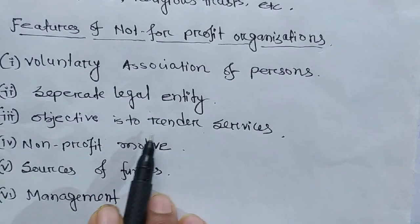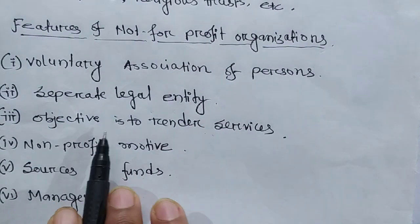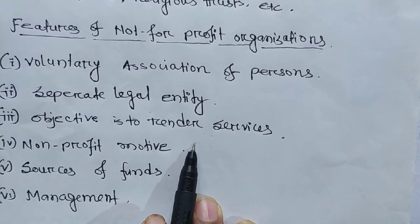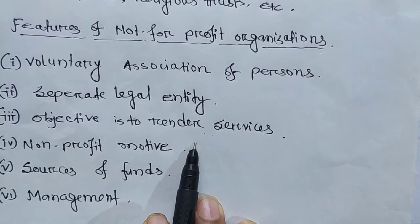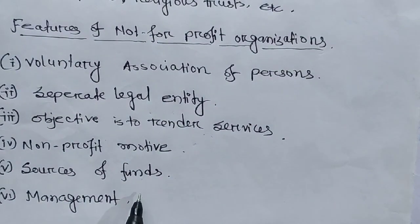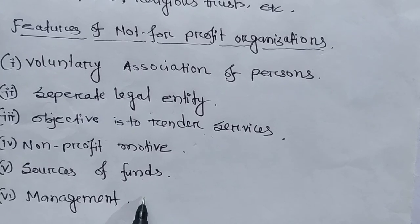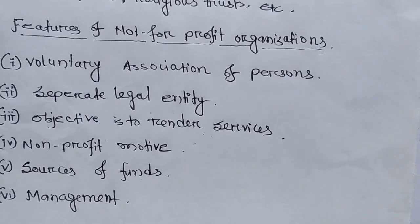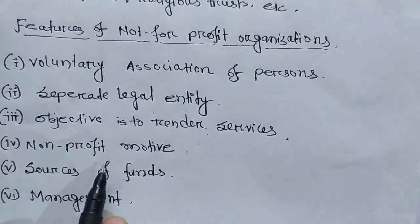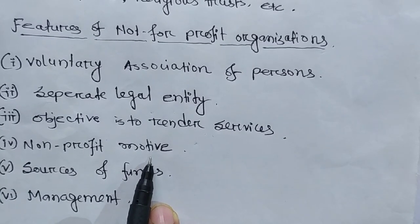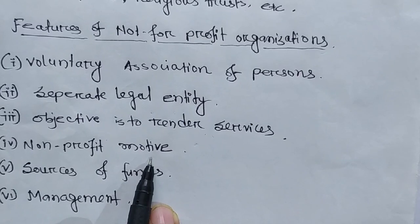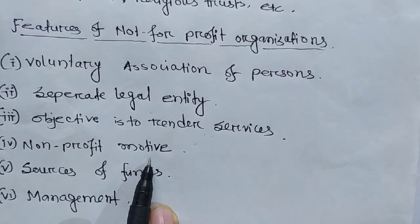The next feature is: objective is to render services. As already mentioned in the definition, the main objective of a Not-for-Profit Seeking Organization is to render services to the members of the society or to their clients. The feature of non-profit motive means their basic objective is to provide services, not to earn profit.